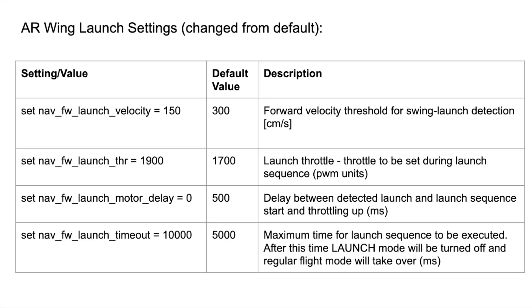I'll quickly go through the parameters I've changed from default in relation to launch settings in iNav. The first setting I changed was the launch velocity — basically how quickly the plane has to be thrown for launch to be detected. When I was hand-launching the AR wing, it sometimes wasn't activating, so I reduced this number to 150, meaning it doesn't have to be thrown as hard.